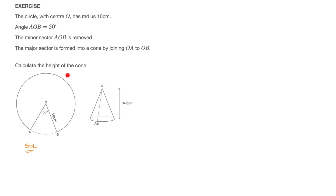On the other hand, when it comes to the major sector, we have all the information we could possibly be given. Indeed, we have the radius — that's 10 centimeters — and we have the angle at the top of the minor sector that was cut out from the original circle. It's worth noting that since the sum of the angles at the center of the circle must add up to 360 degrees, the angle at the center of the major sector must equal 310 degrees.